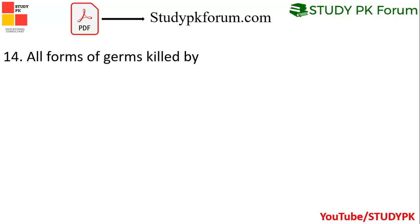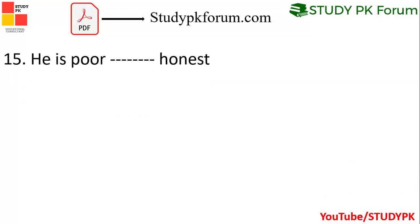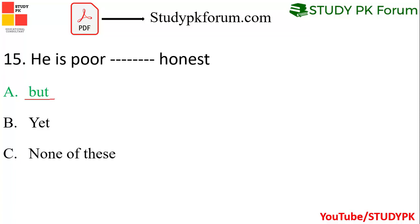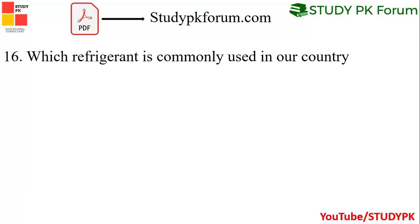Question 14/15: All forms of germs are killed by which process — sterilization, pasteurization, or corruption? Sterilization is the right answer. Question 16: Which refrigerant gas is commonly used in our country? Ammonia is the right answer.